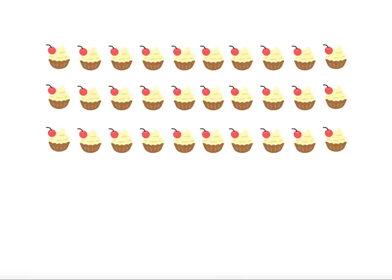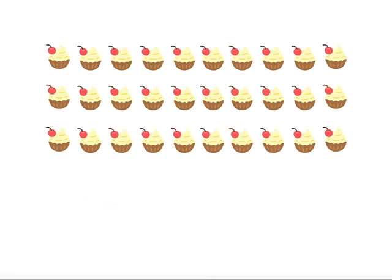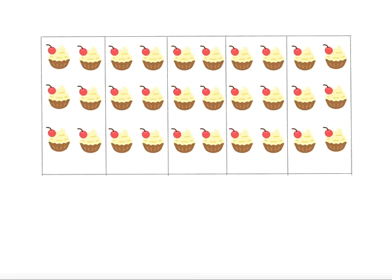With the array, the number sentence depends on the question. With this cupcake question, if my question is: I bake three batches of 10 cupcakes, how many altogether? My number sentence is 3 multiplied by 10, which equals 30. If I then put the cakes into boxes with 6 in each box, my number sentence uses division: 30 divided by 6 equals 5 boxes of cakes.